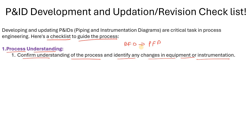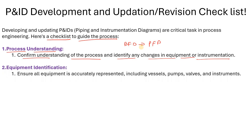The next item is equipment identification. Ensure all equipment is accurately represented, including vessels, pumps, heat exchangers, valves, and instruments. So from where will you see all these symbols? You can see these symbols from the legend sheets. Obviously if you are developing or revising P&IDs, there will be legend sheets for the P&IDs, or your company would have legend sheets for the particular P&ID you are revising.